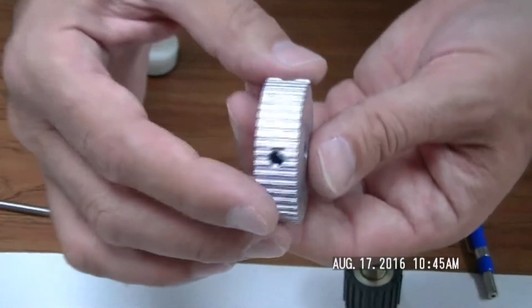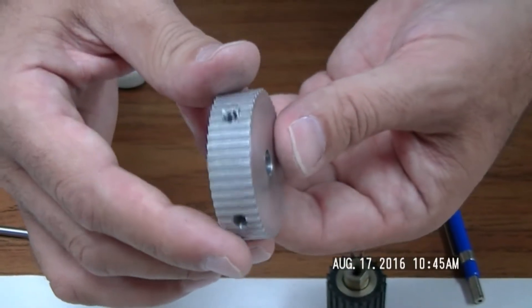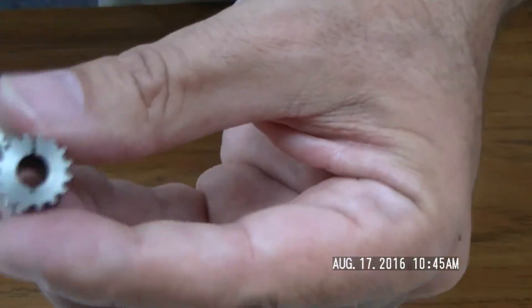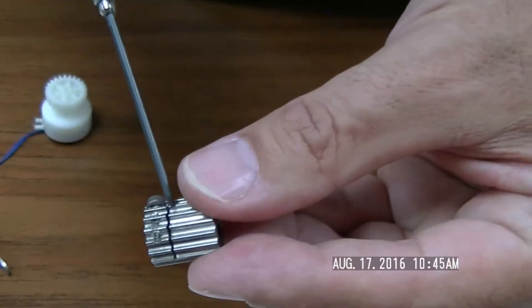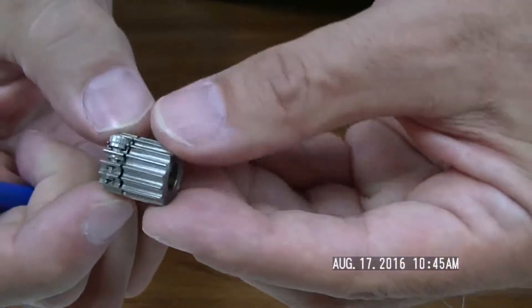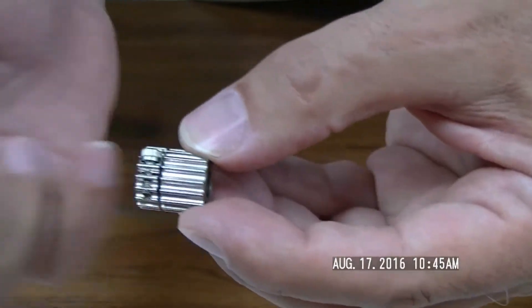You can put set screws right through your pulley teeth. In this case here, everything is so small, we actually put a cut into our gear. See the slot here? We put another slot here, and we use the gear itself to clamp down on the shaft.